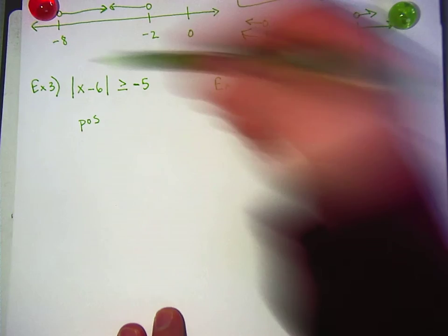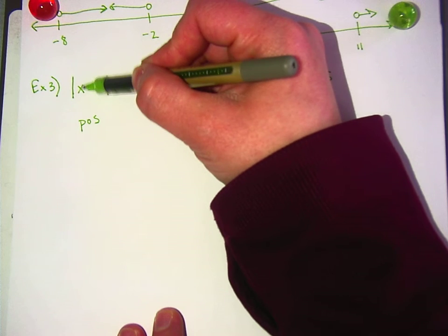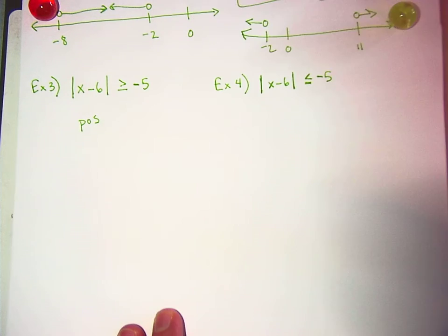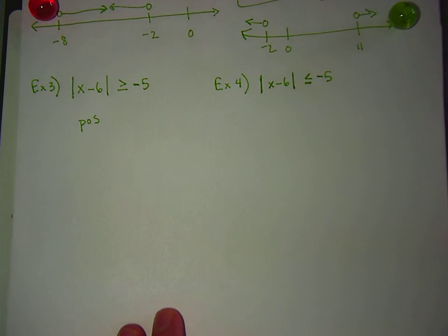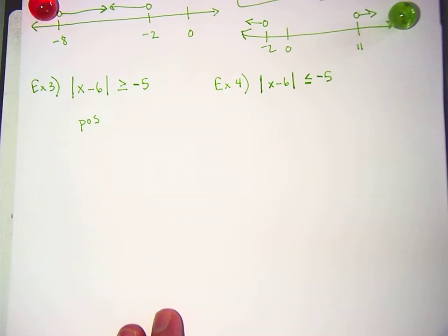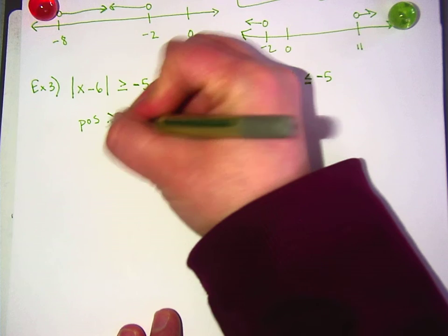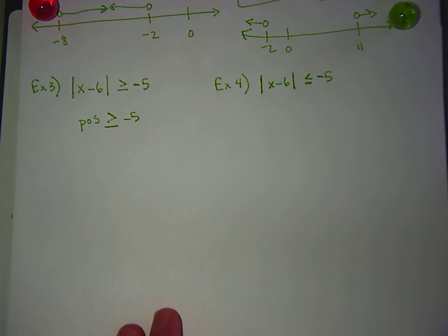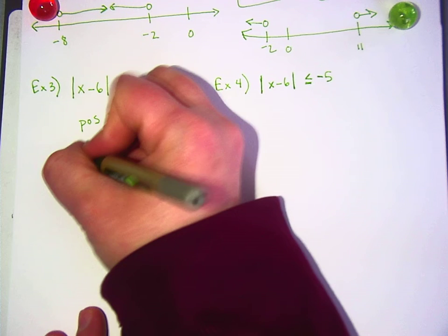Because an absolute value in the end is going to make it positive. I'm not saying that x is positive. I'm saying that, like if I put in a negative 3 right here, imagine it would be negative 3 minus 6, which is negative 9. What's the absolute value of negative 9? 9, which would be positive, right? So no matter what, the absolute value is going to make it positive in the end. Do you guys agree? And when is a positive number greater than or equal to negative 5? Always. A positive number will always be. So this one is infinite solutions.